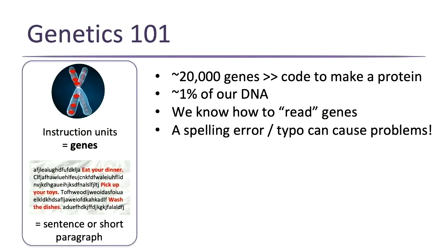Humans have about 20,000 instruction units or genes. Each has a code — the DNA code — that tells the cell to make a particular protein. Interestingly, the genes account for only about 1% of our DNA as we walk along the chromosome. The other 99% is probably support structure — some of it we understand, some we don't, but we can't read it the same way we can read genes.